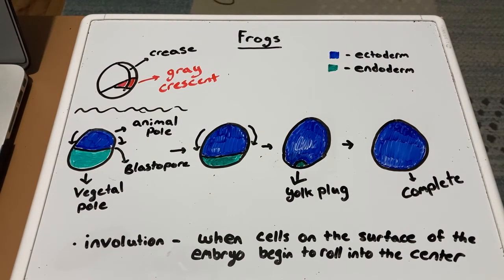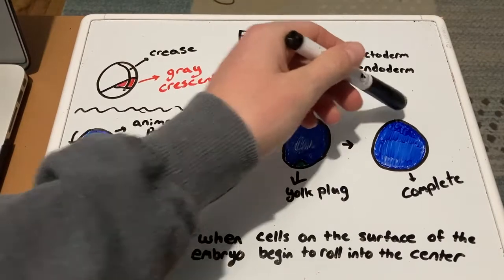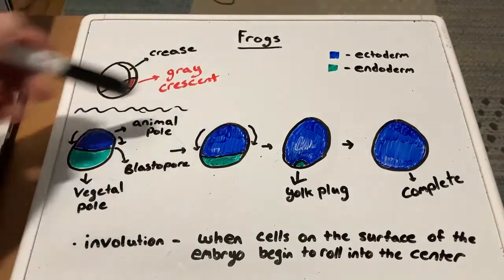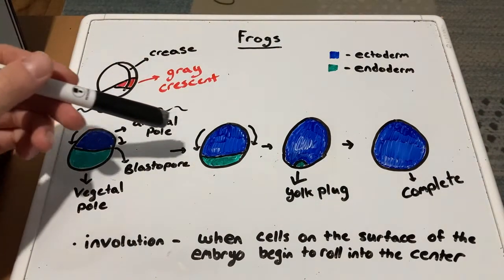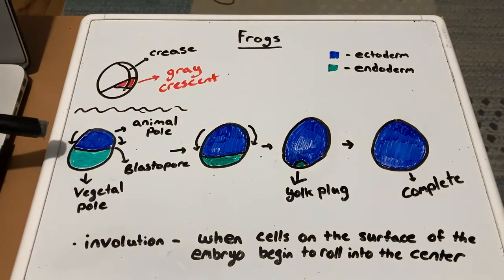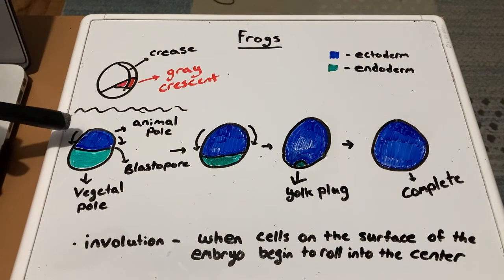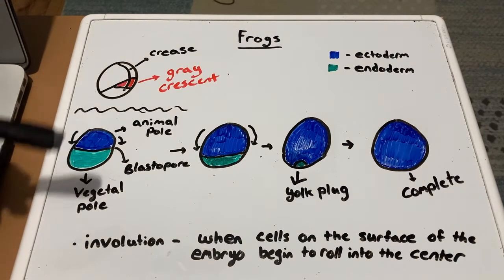After this, the endoderm and mesoderm cells on the surface of the embryo begin to roll into the center, and this process is known as involution. As you move along the steps in this process, the ectoderm cells, seen in blue, appear to be taking over. What's actually happening is these endoderm cells, seen in green, are moving inward on the embryo, and the ectoderm cells are beginning to cover the surface.